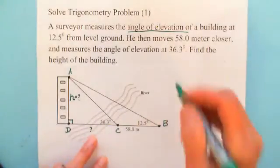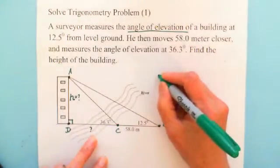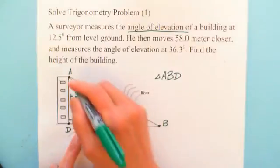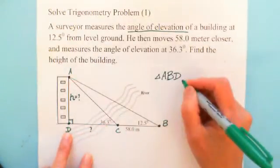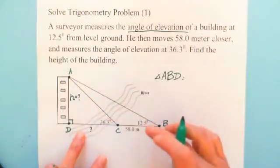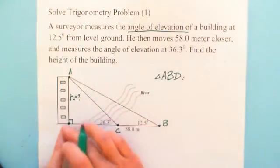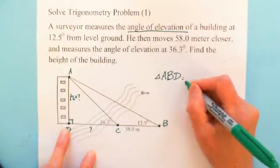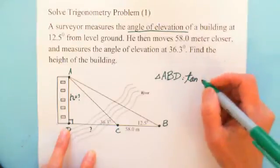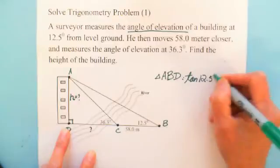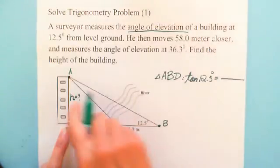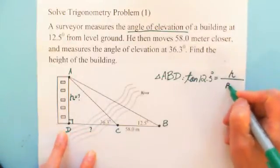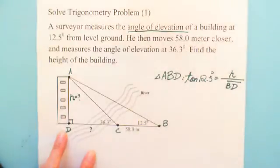First, let's write in triangle ABD. This is the right triangle, so H is opposite with 12.5 and BD is adjacent. So we can write the tangent: tangent 12.5 degrees. The opposite side is H, the adjacent side is BD. So we'll put the bar on top.